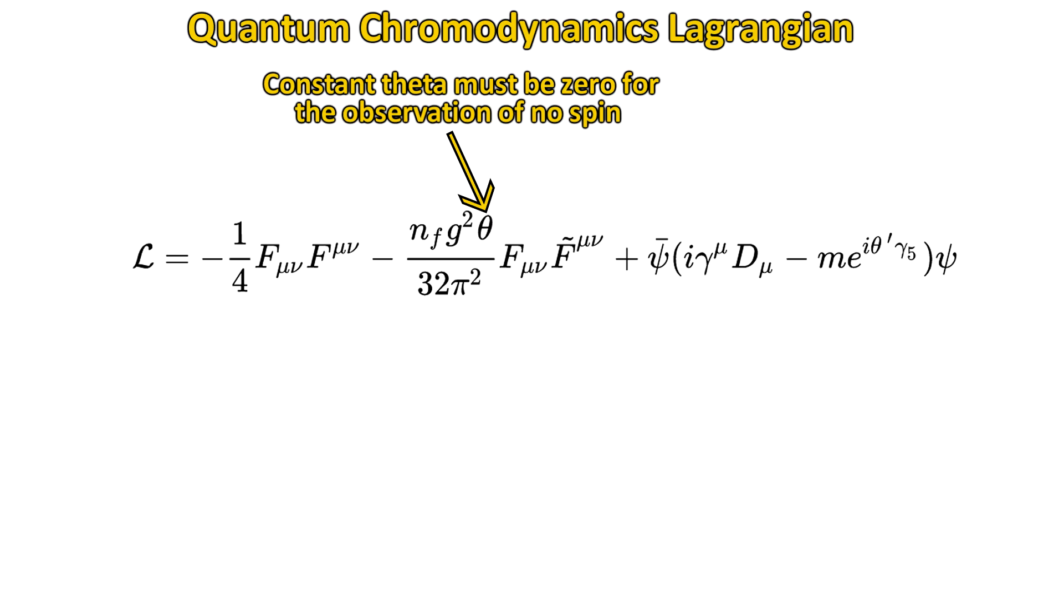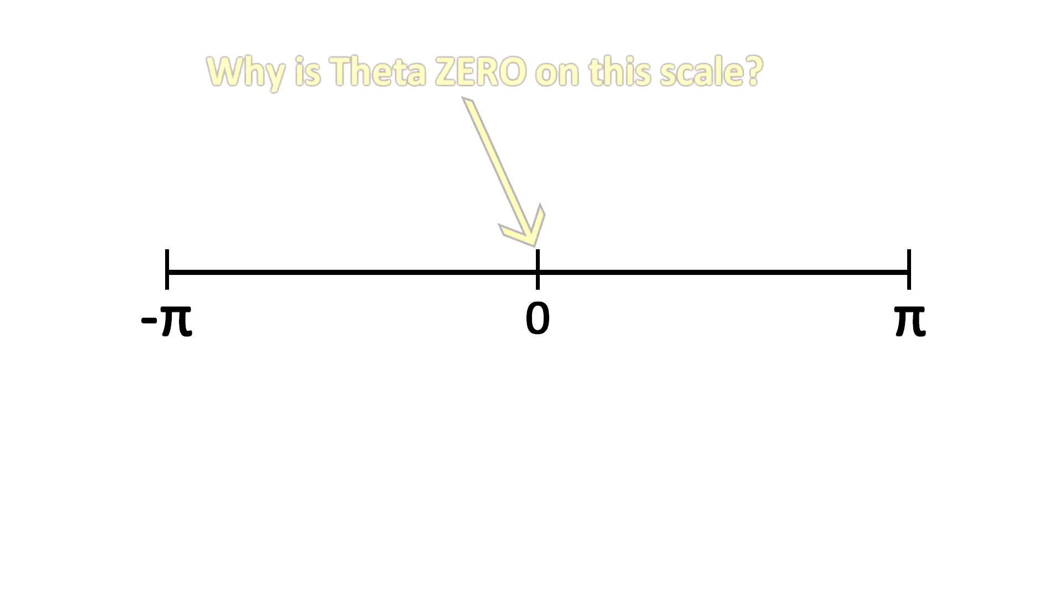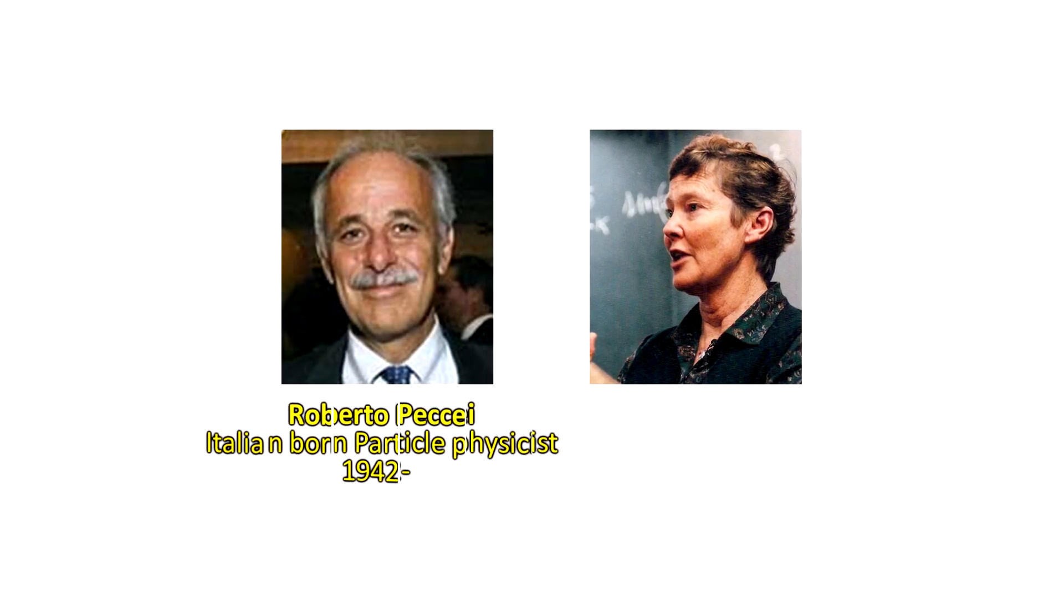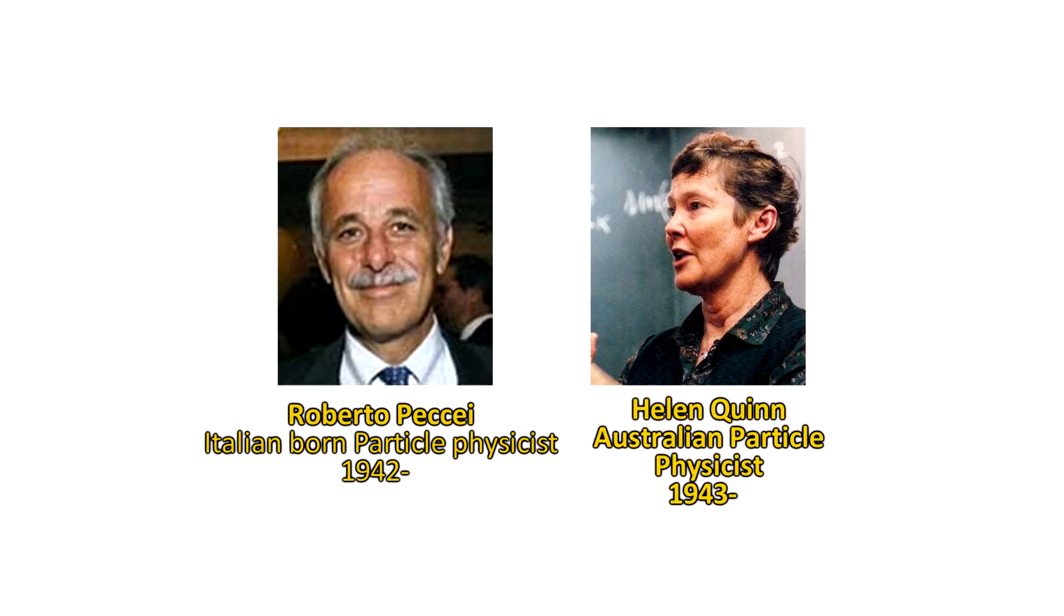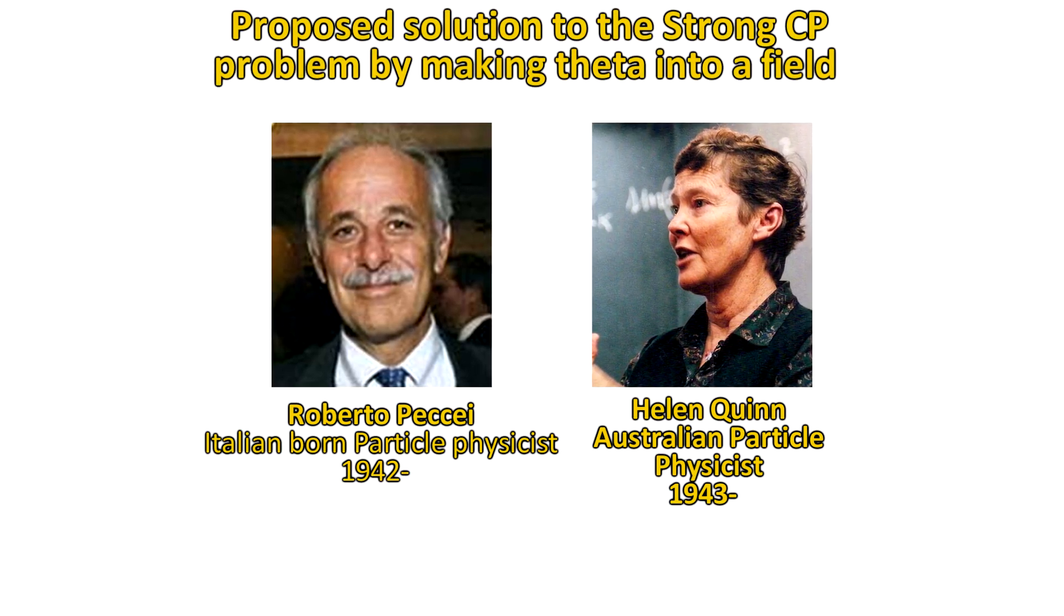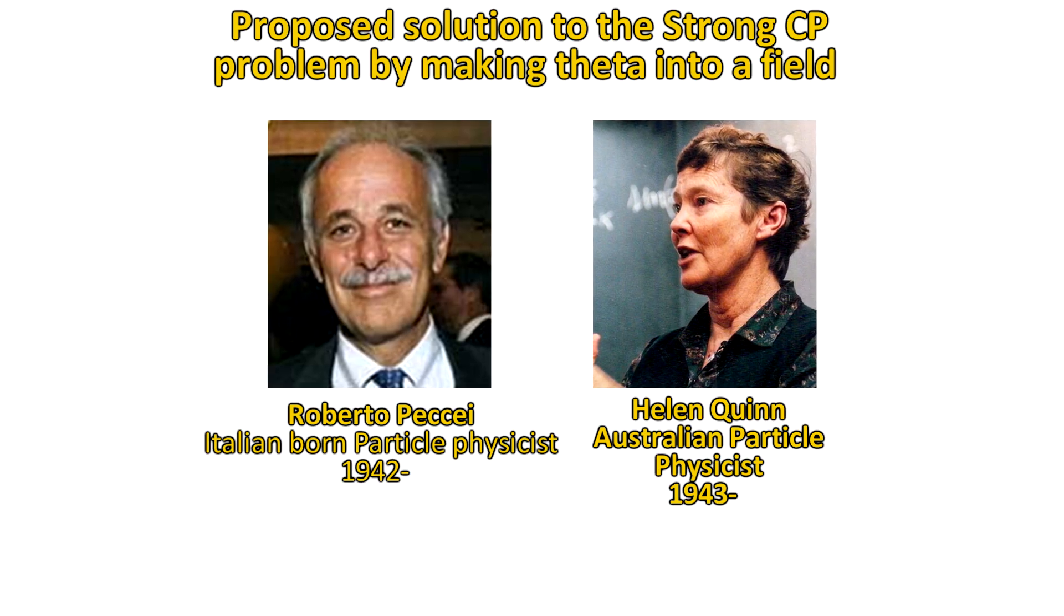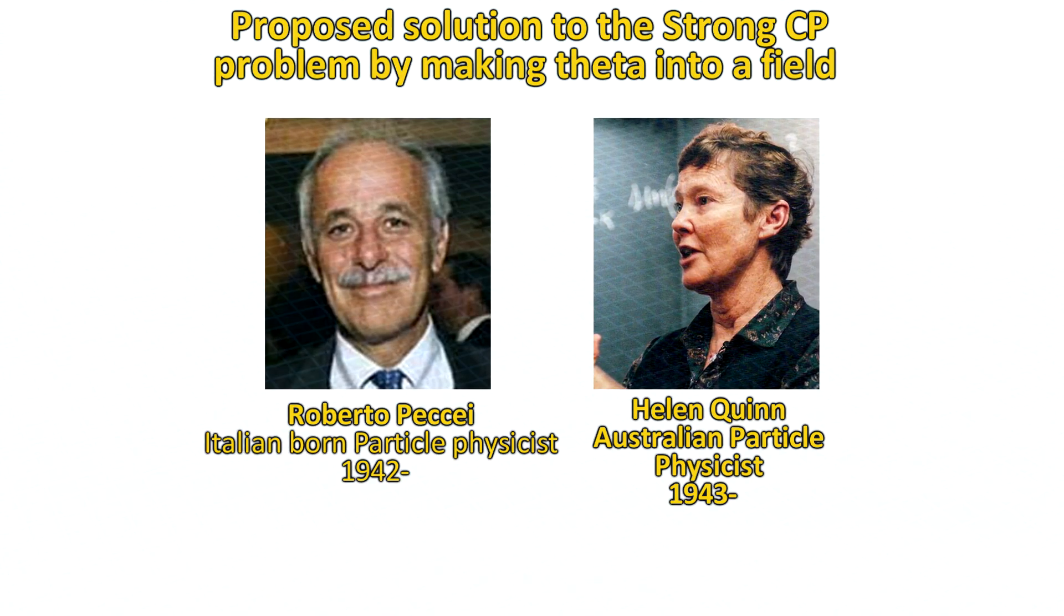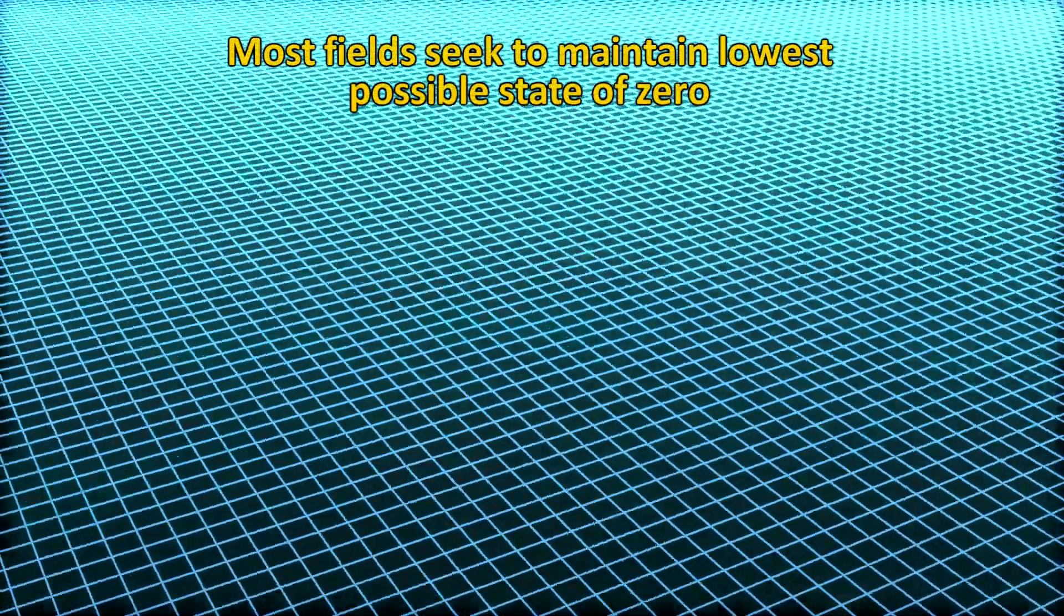And physicists don't like coincidences. In 1977, two physicists, Roberto Peccei and Helen Quinn, proposed a theory which solved this problem by creating a new field for theta, instead of it being just a fundamental constant. And since most fields seek to maintain the lowest possible energy state of zero, that's what theta would also seek to be zero. But if theta is a field, like the electromagnetic field or the quark field, it means that it will have a particle associated with an excitation of the field.